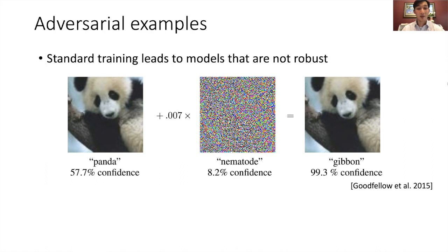The presence of adversarial examples is commonly used to show that standard training leads to models that are not robust. Here, an image of a panda plus a small, carefully chosen perturbation results in the model predicting Gibbon with high confidence.